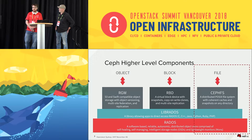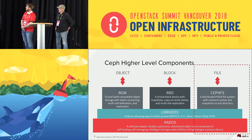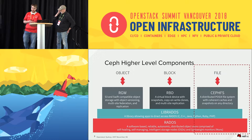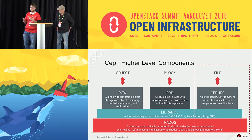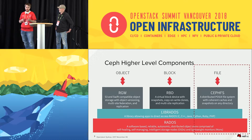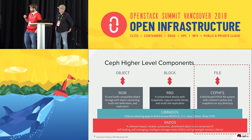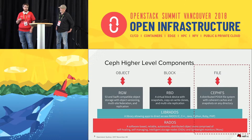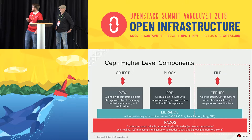To give a very brief overview of what Ceph is: Ceph is a distributed object store primarily, at the bottom layer we call Rados. On top of that, we provide several storage abstractions. For example, we have object storage via RGW, which is an S3-style interface; RBD, which provides virtual block devices used with Cinder in OpenStack; and CephFS, which provides a distributed POSIX file system used with Manila in OpenStack.